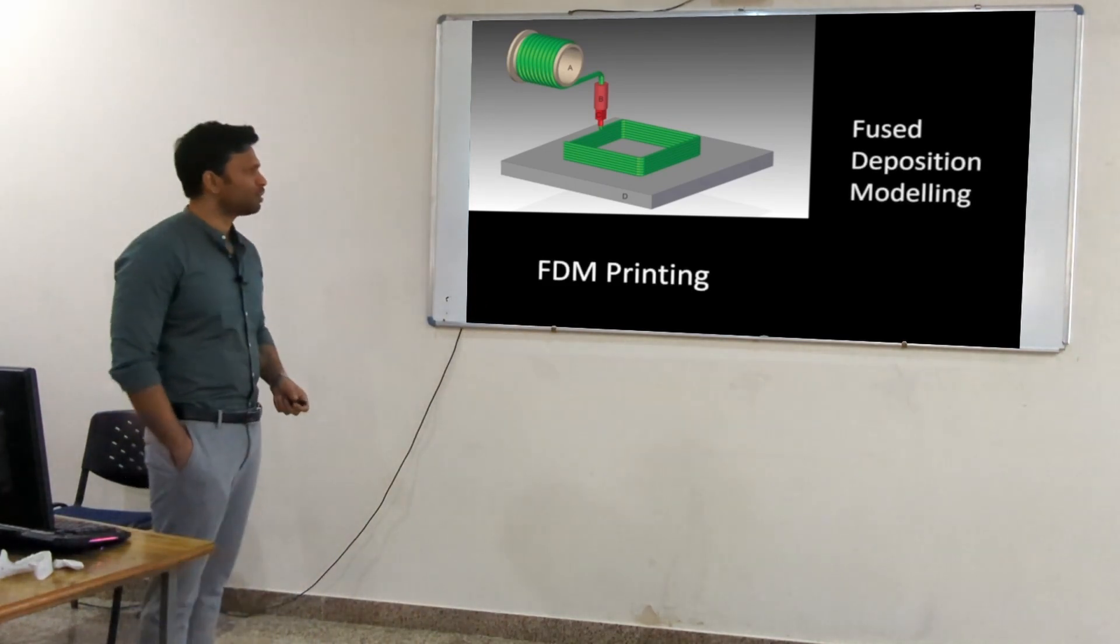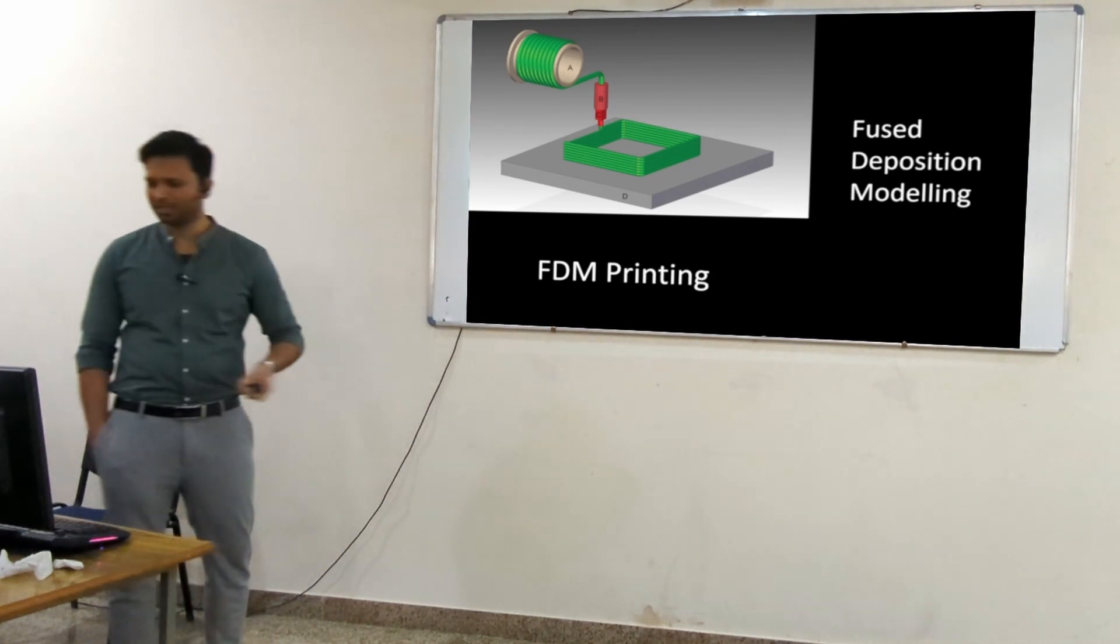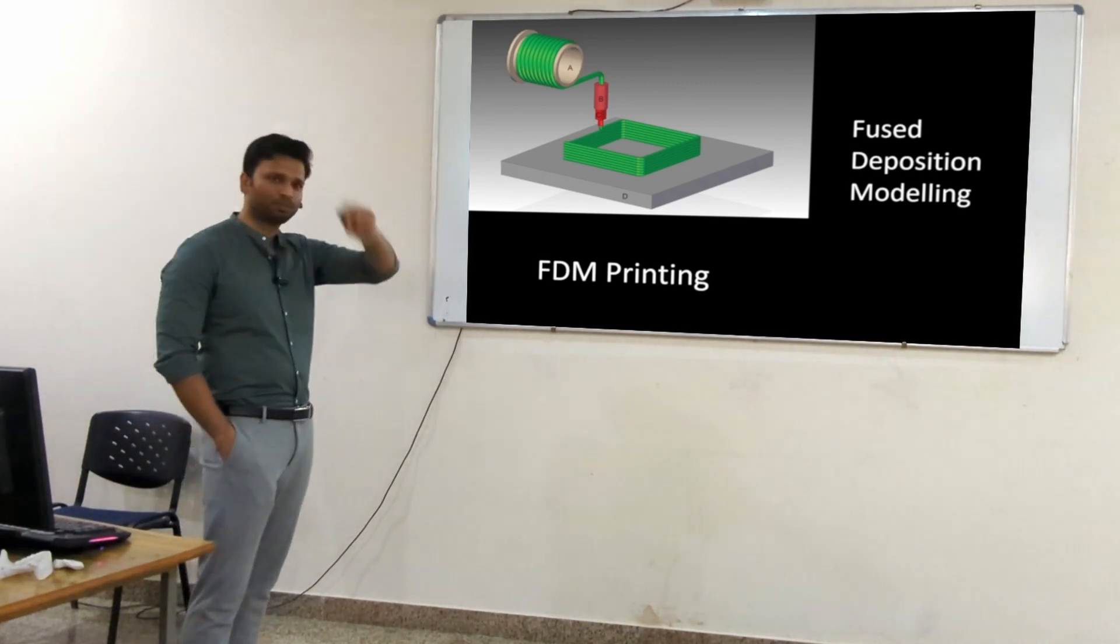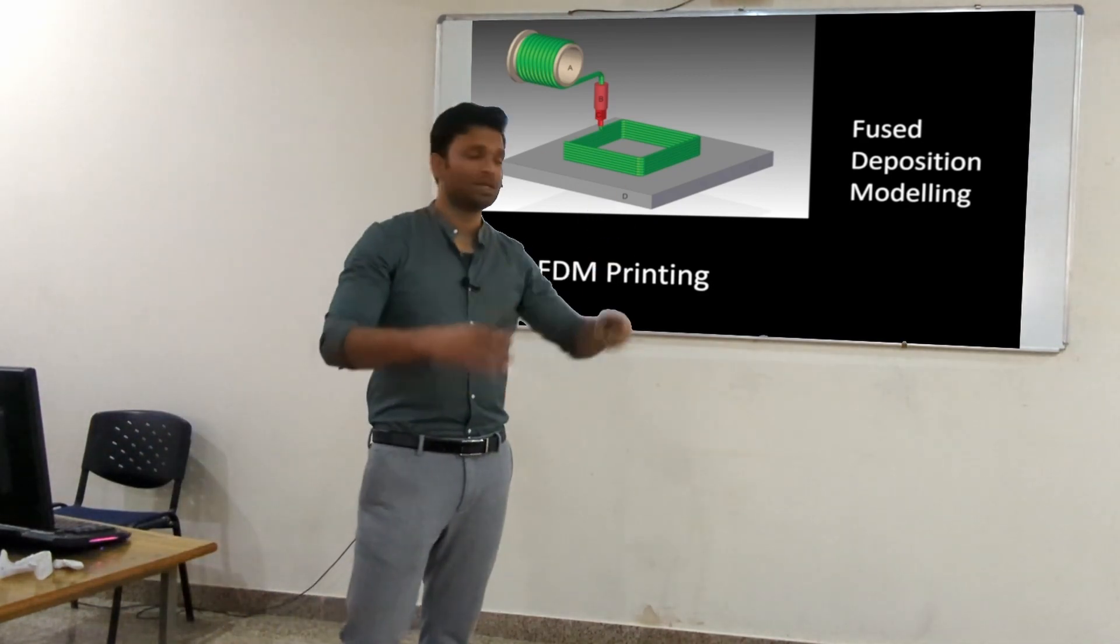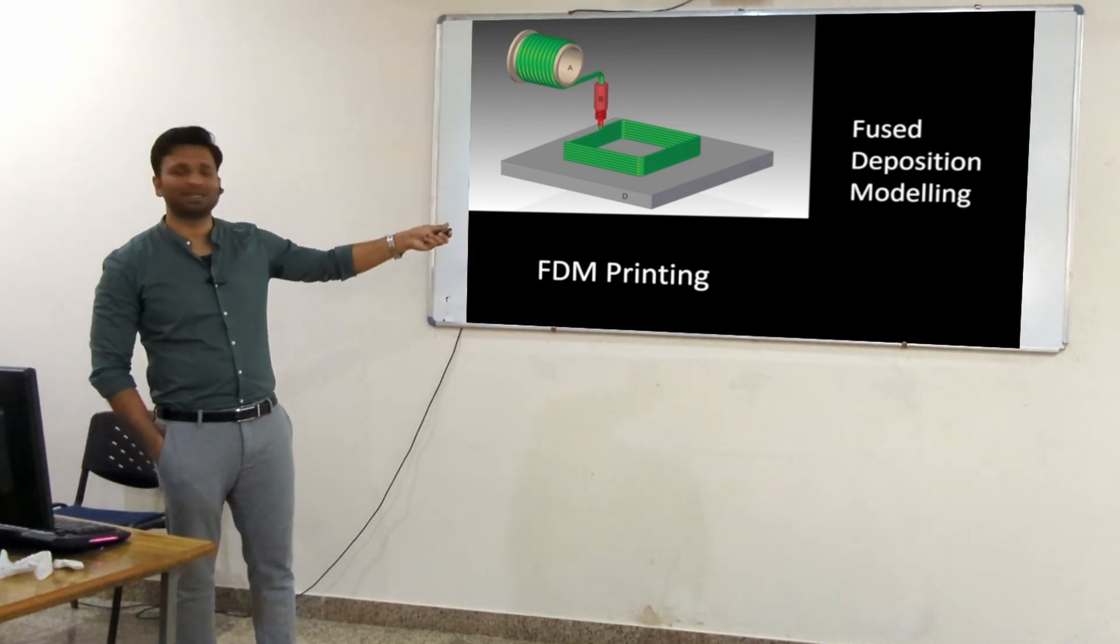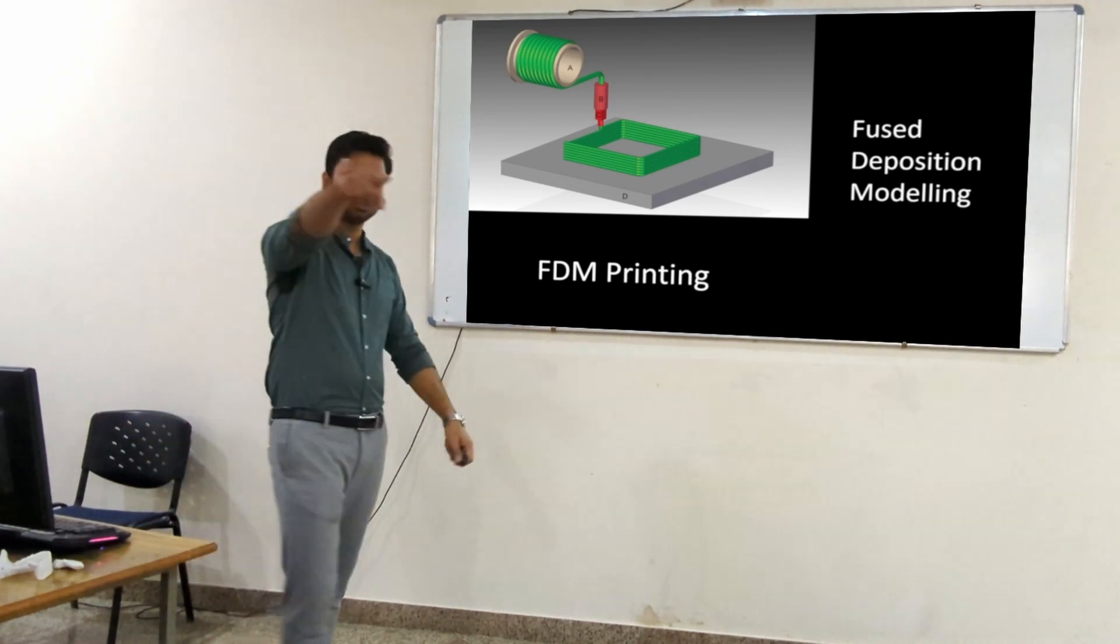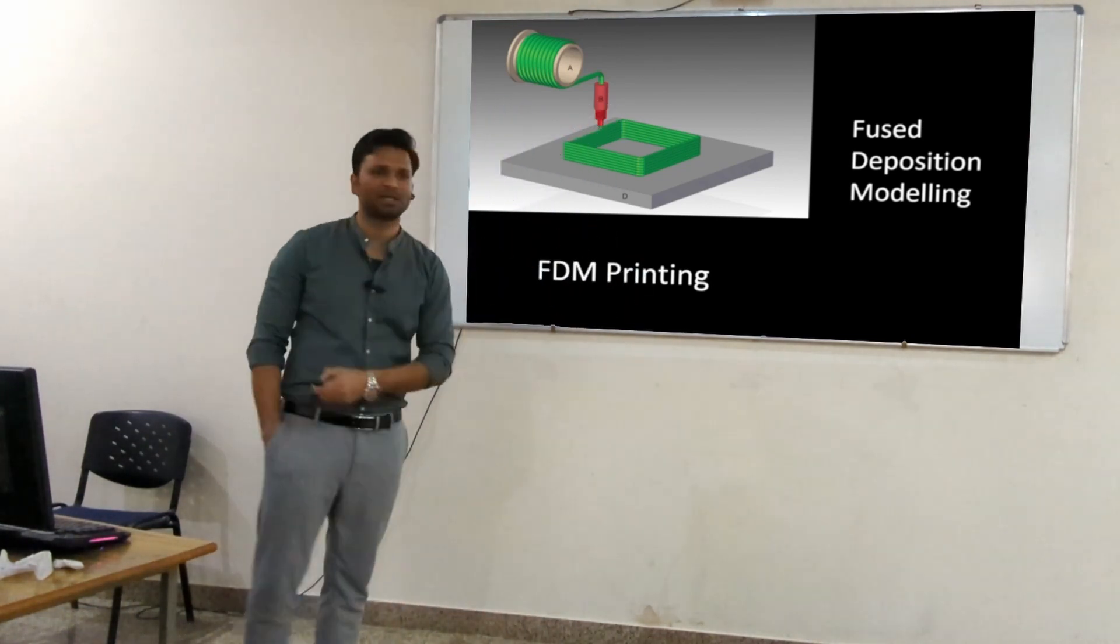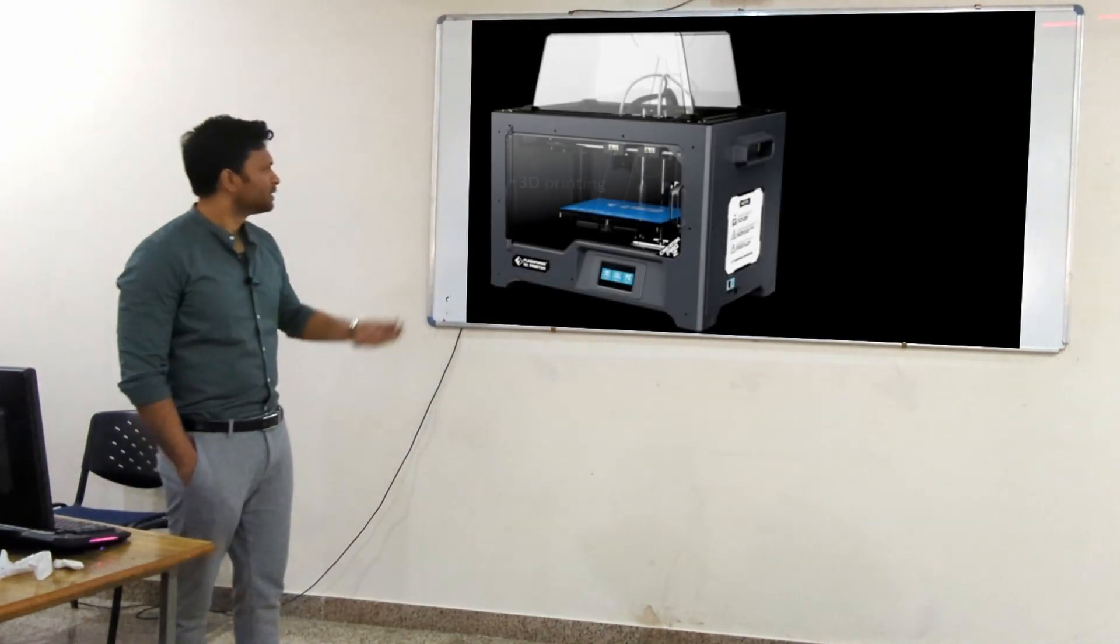On the other hand, we have additive modeling. This particular printing model is FDM printing - fused deposition modeling. As the name suggests, we have a spool of plastic filament. That filament passes through a very hot nozzle, melts, and then that molten plastic is deposited layer by layer. That's why you see the horizontal lines in the mandible that is printed because we have an FDM printer at our department.